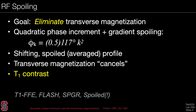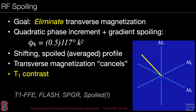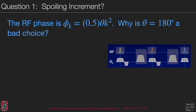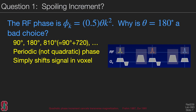A quadratic phase increment, when shown as RF tips from equilibrium, shows the magnetization being tipped in an apparently more or less random direction. Considering why theta equal to 180 degrees is a bad choice: if we look at the phase that this leads to, it actually alternates the phase between 90 degrees and 180 degrees. This is not a quadratic phase; it will lead to a periodic signal and not the desirable pseudorandom phase.